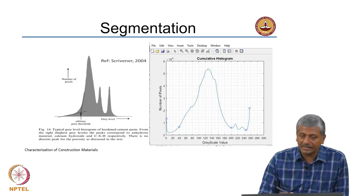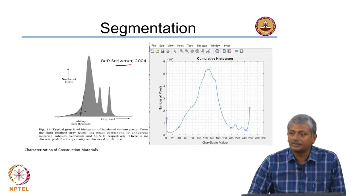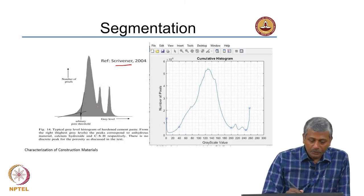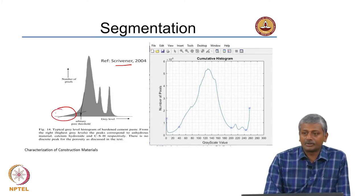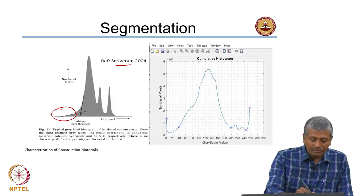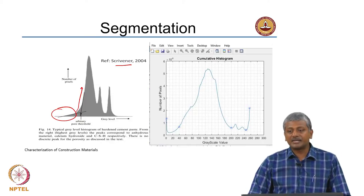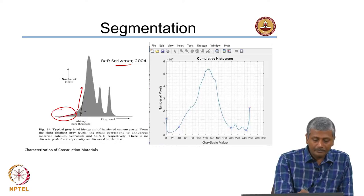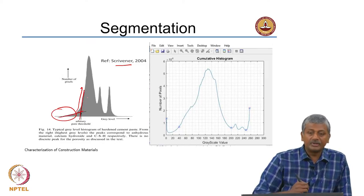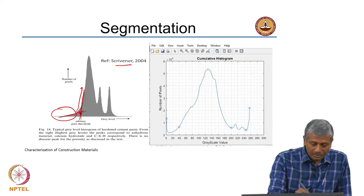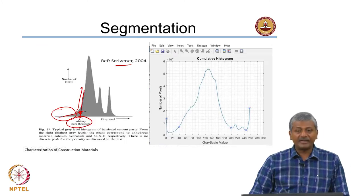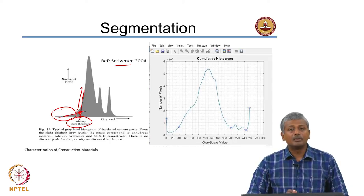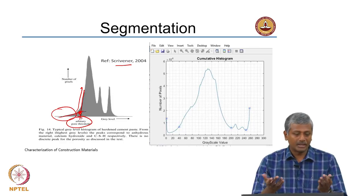This segmentation technique is defined by Karen Scrivener, one of the leading cement chemists in the world. If you look at the grey level histogram of a typical hydrated cement paste, your porosity is on the dark side of the histogram. The changeover from that to the high level of frequency exhibited by certain phases like outer C-S-H is a fairly sudden transition. If you draw a tangent there and a tangent to the vertically rising segment of the histogram, the point at which these two tangents intersect can be defined as an arbitrary threshold for your porosity. Anything to the left of that grey level is characterized as a void or pore; anything to the right is a solid phase.